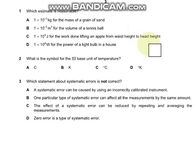Hello, welcome back. This is A-level physics, Summer 22 Paper 1 Variant 2. Let's start with question number 1. Question 1 asks which estimate is reasonable, and the answer is C because this is the most reasonable estimate.